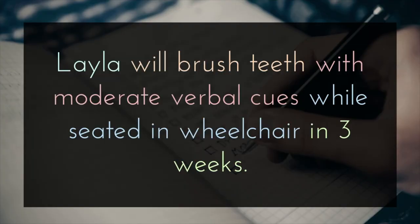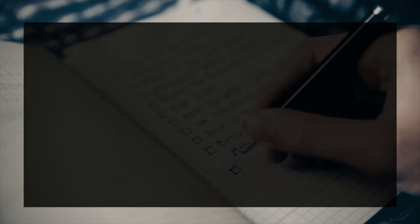Next, let's look at Layla's goal: 'Layla will brush teeth with moderate verbal cues while seated in wheelchair in three weeks.' Layla is the client, brushing the teeth is the occupation, moderate verbal cues is the assistance level, while seated in a wheelchair is the specific condition, and within three weeks is the timeline that we're trying to accomplish this goal.